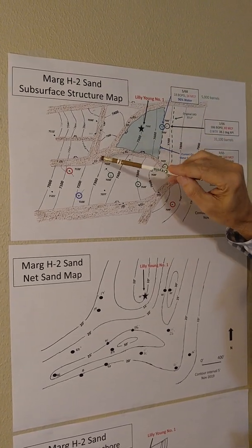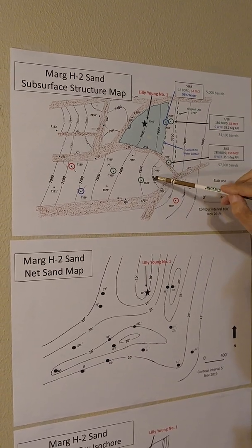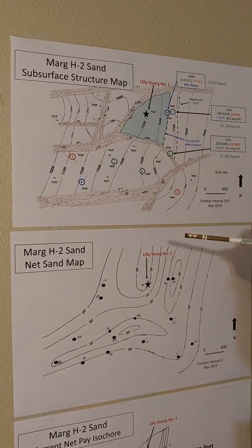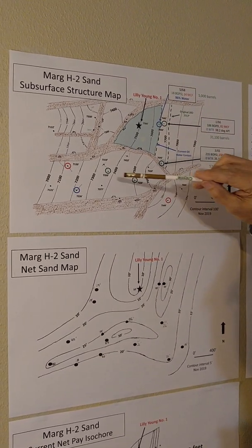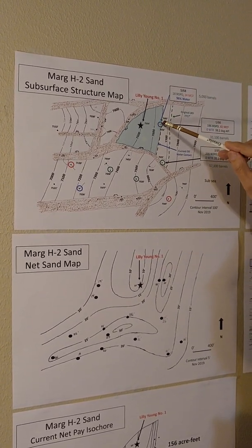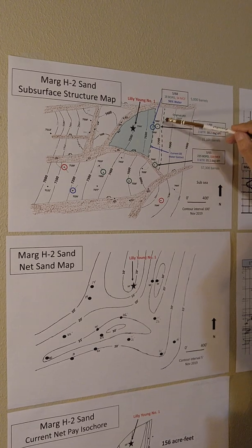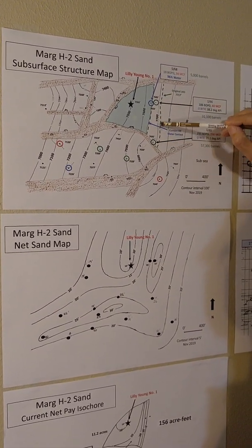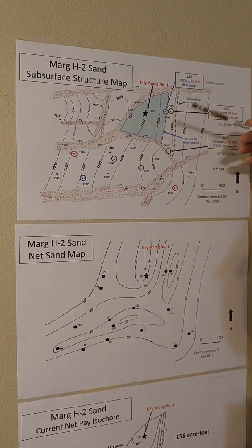This map is based on the seismic — it has all the faults in brown, the well take points, and contouring of the structure. We've also annotated all the wells that have tested or produced in the reservoir. These three wells have produced in the subject fault block. And originally in 1965, when they drilled the first well, the lowest known oil was here — so that's as far down as we think the oil is; it's up that way.